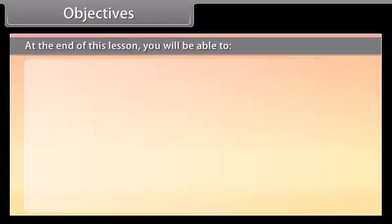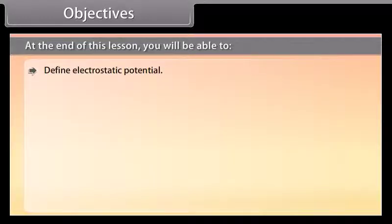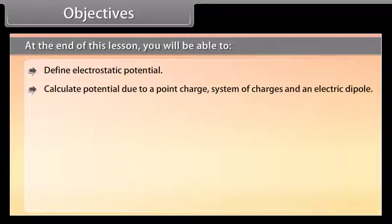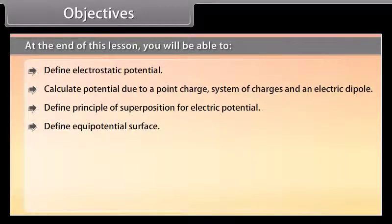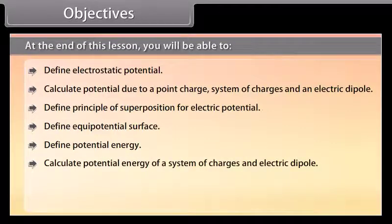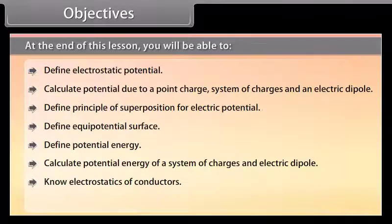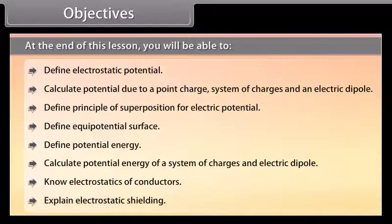At the end of this lesson, you'll be able to: define electrostatic potential; calculate potential due to a point charge, system of charges, and an electric dipole; define the principle of superposition for electric potential; define equipotential surfaces; define potential energy; calculate potential energy of a system of charges and an electrical dipole; understand electrostatics of conductors; and explain electrostatic shielding.